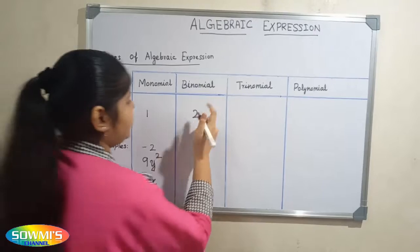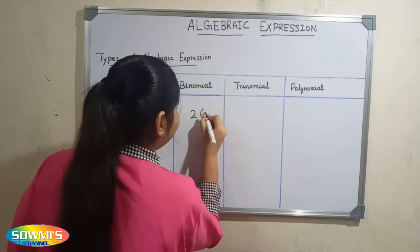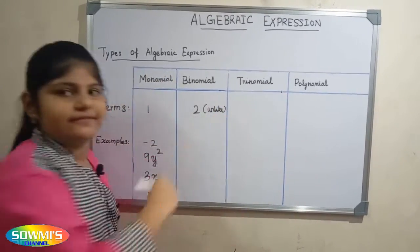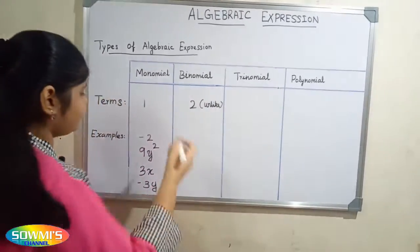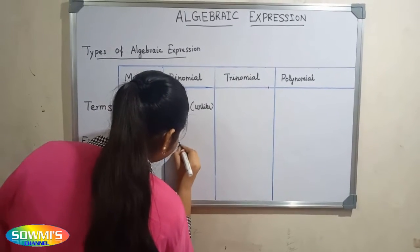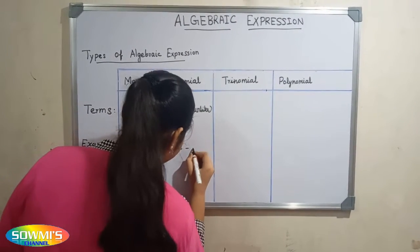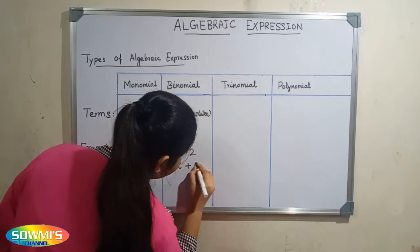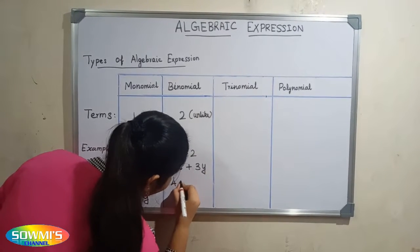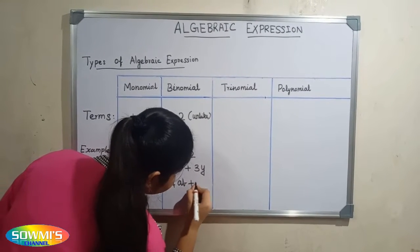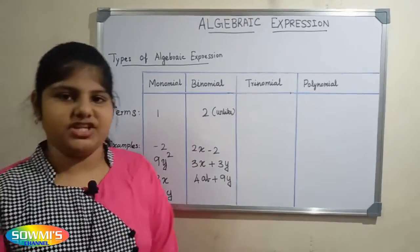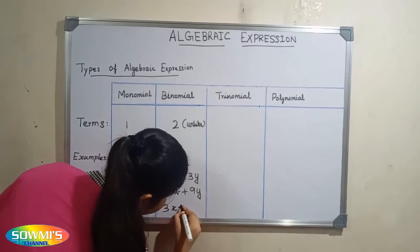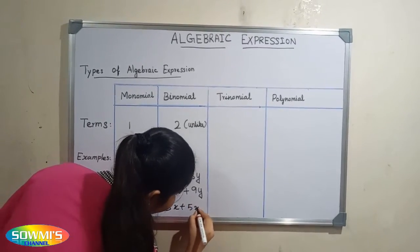Next we will talk about binomial. 'Bi' means two. An algebraic expression which has two terms is called a binomial — that is, unlike terms. For example: 2x minus 2, 3x plus 3y, 4ab plus 9y, etc.